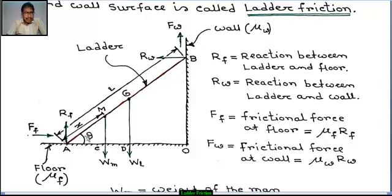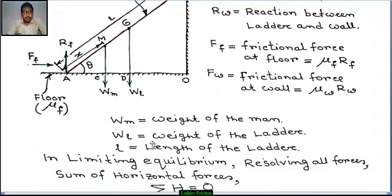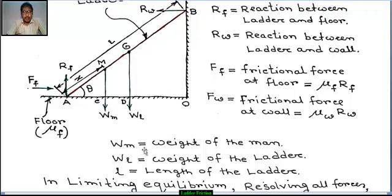Frictional force at the wall acts in the right side in the opposite direction. Capital FW is the frictional force at wall: F = mu_W × RW. Capital FF, frictional force at floor, equals mu_F × RF. Capital WM equals weight of the man. Capital WL equals weight of the ladder. L means length of the ladder.